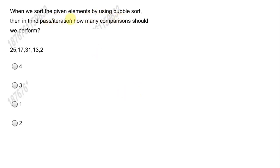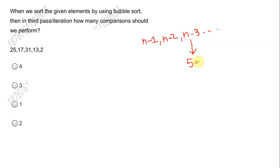Here we have a question based on bubble sort. If we sort the given elements using bubble sort, how many comparisons are performed in the third pass? For bubble sort, comparisons are n-1 for the first pass, n-2 for the second pass, and n-3 for the third pass. Here n is 5 elements, so at the third iteration we have 5-3 = 2 comparisons. The correct answer is option D.